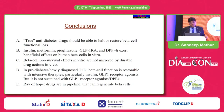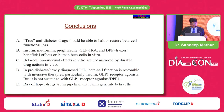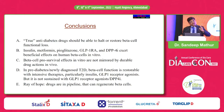In conclusion: true anti-diabetic drugs should be able to halt or restore beta cell function — that should be a very important objective of your treatment. In pre-diabetic and newly diagnosed diabetes patients, beta cell function is restorable with intensive therapies, particularly insulin and GLP-1 analog receptor agonists, but not sustained with GLP-1 receptor agonists or DPP-4 inhibitors. Early initiation of insulin for 2 weeks is a wonderful strategy for the patient's life after 20 years. Drugs are in the pipeline that can regenerate beta cells. Thank you very much.